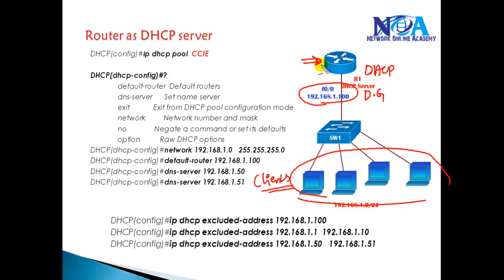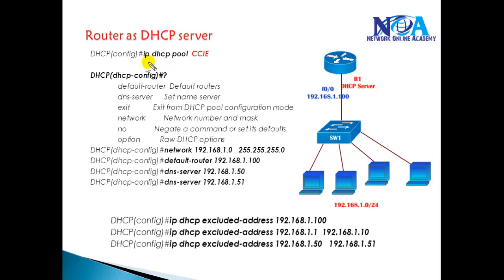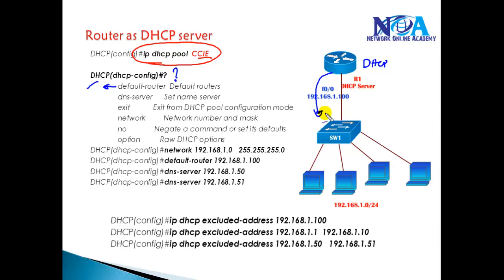We are going to configure a range of addresses on the DHCP server, and we expect the clients to get IP addresses based on that range. The first thing we need to do is create a DHCP pool using the command 'ip dhcp pool' followed by a name — I'm using 'CCIE' as the name. Then we need to tell the DHCP server who is the gateway, so it can propagate that information in DHCP messages. In my scenario, the default router is 192.168.1.100.